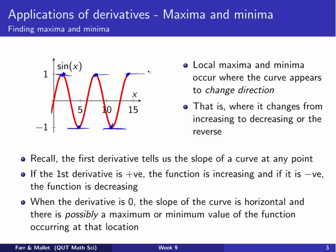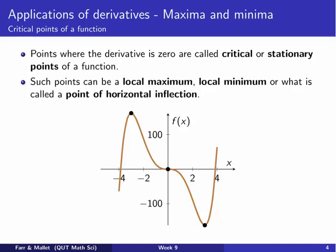It's possible that there is a maximum or minimum value of the function occurring at those locations. There are actually some other places where the curve can have a zero derivative that aren't local maxima and minima. So what we're going to do to find maxima and minima is find these points where we have zero slope and where the slope changes from positive to negative or alternatively negative to positive. These points where we have a zero derivative get a special name — we call them either critical points or stationary points.